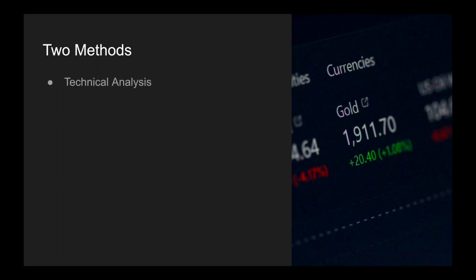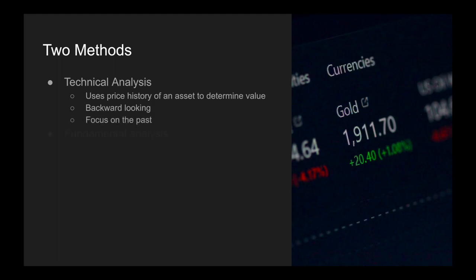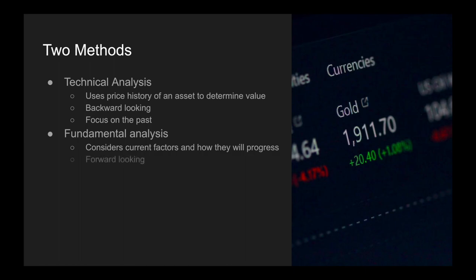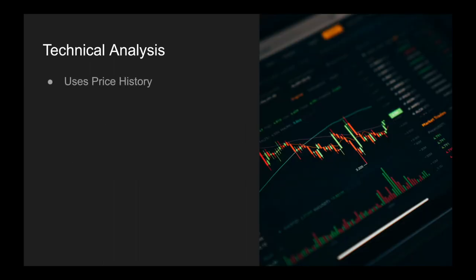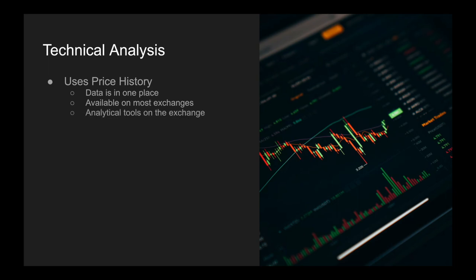Technical analysis is when you use the price history of an asset to determine its value. It is backward-looking because you're looking at history, focusing on the past. Fundamental analysis considers the current factors around an asset and how they will progress — it is therefore forward-looking and focuses on the future. Technical analysis uses price history, and all of this data is in one place. It's also available on most exchanges — you go into Bybit and can see the price history of any given token, along with analytical tools and candlestick format price data.